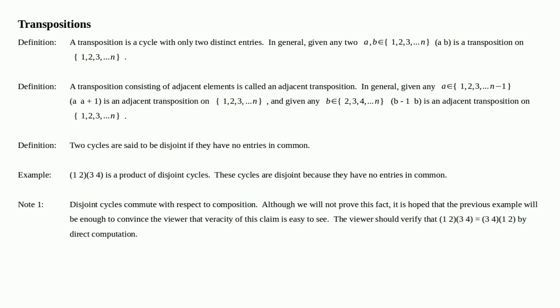So go ahead and compute those two cycles and see that they're actually the same permutation. I hope that's enough to convince you and that we don't have to do a full-blown proof of that fact. It should be obvious once you do that computation that disjoint cycles commute.